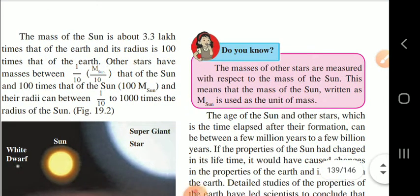The mass of the sun is about 3.3 lakh times that of the earth, and its radius is 100 times that of the earth. Other stars have masses ranging from 1/10 to 100 times the mass of the sun.